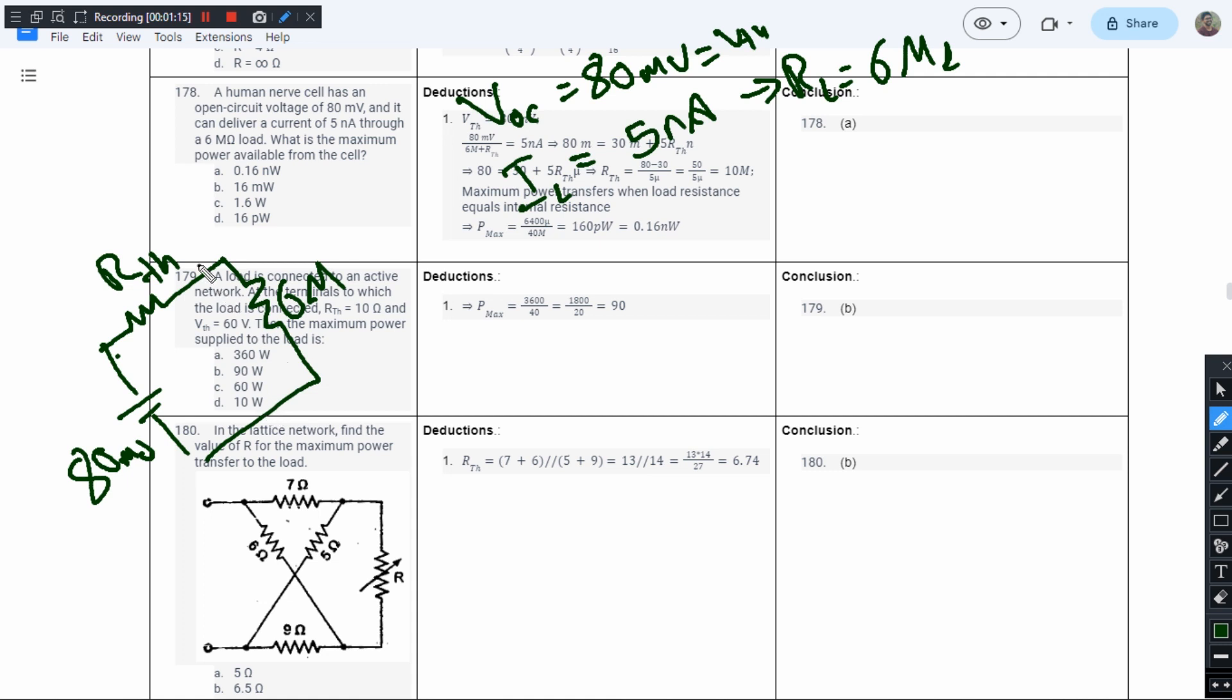The load current is equal to 5 nanoamperes. Let's apply Kirchhoff's voltage law: 80 millivolts equals 5 nano times R_Thevenin plus 30 millivolts. Since nano is 10^-9 and mega is 10^6, when multiplied we get millivolts.